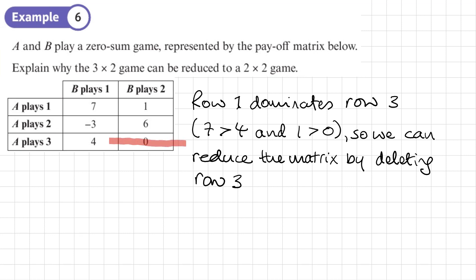So if we were to do that, we'd cross that out and now it becomes a 2×2 game. But we must say which row dominates the other. And we must show these inequalities to show that we're comparing the entries to show whether they're bigger or smaller.